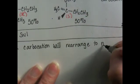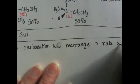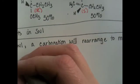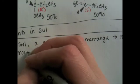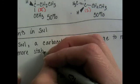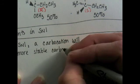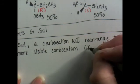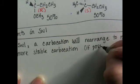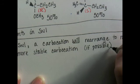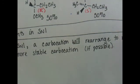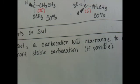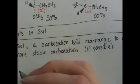to make a more stable carbocation, if possible. It may not be possible for it to do it, but if it can figure out how, it's going to do it. There are two ways that carbocations will rearrange to come up with something more stable.